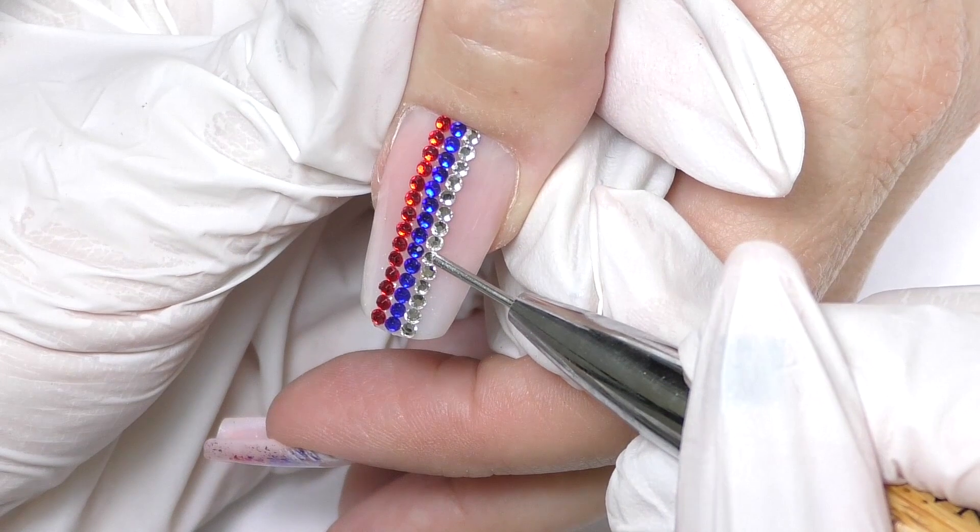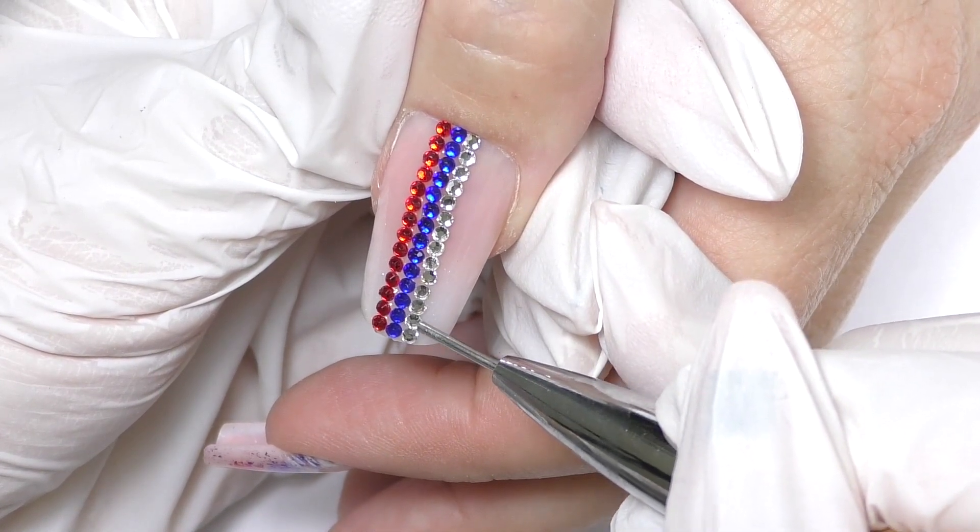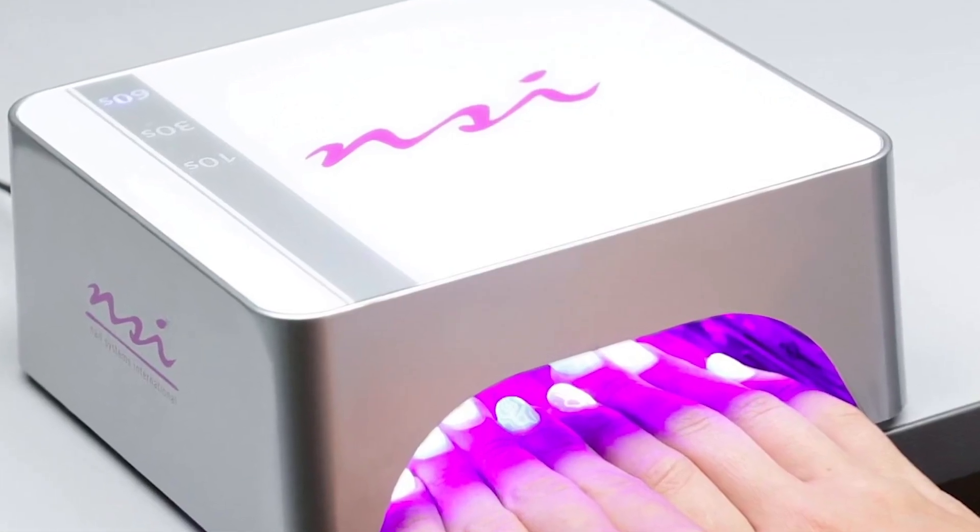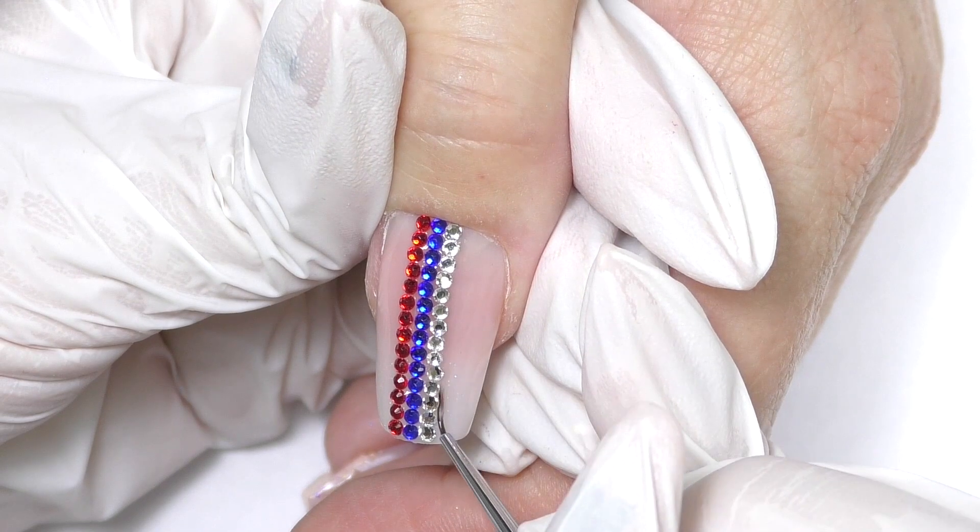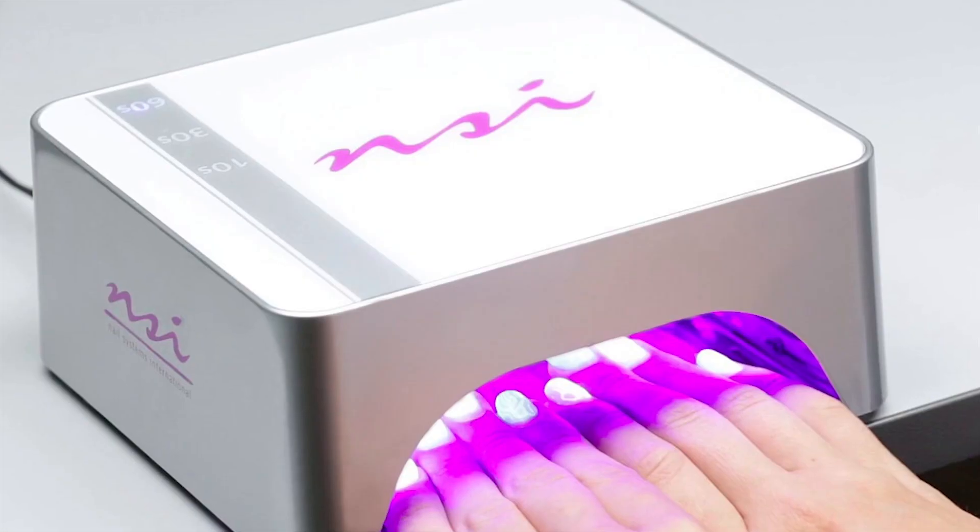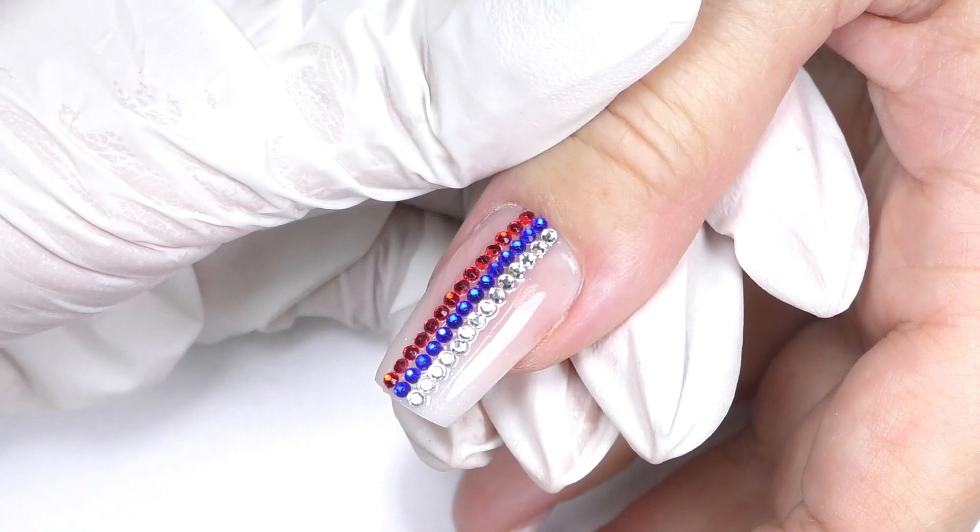So I add three rows of them and then we need to make sure they're all straight. With the opposite side of the tool you can fix it. Then we cure it for one minute in LED and with the top coat I outline them from all sides and then I will cure it again one minute in LED and the design is ready.